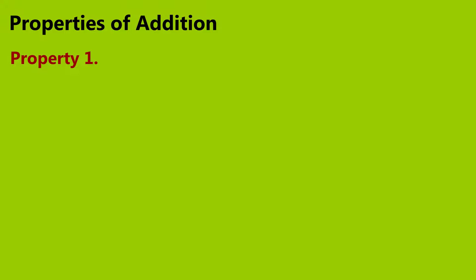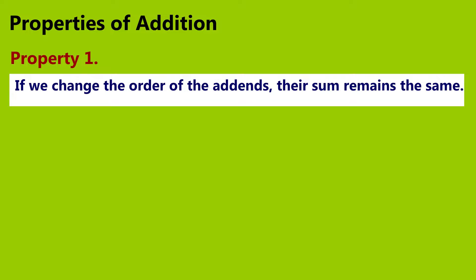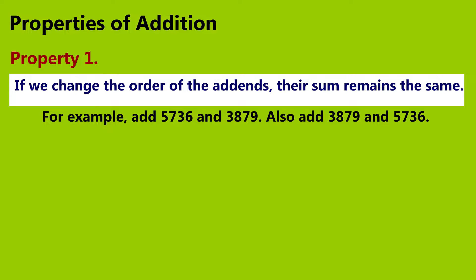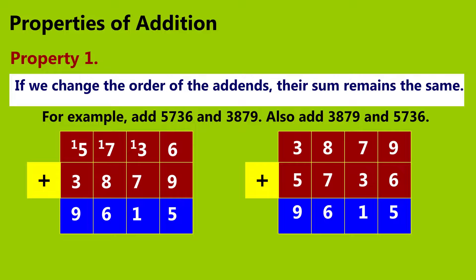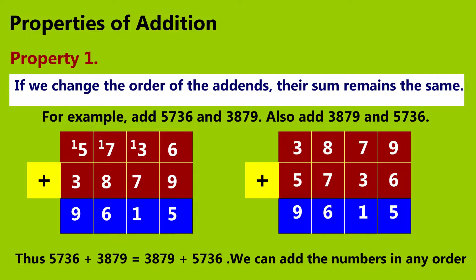Properties of addition. Property 1: If we change the order of the addends, their sum remains the same. For example, add five thousand seven hundred and thirty-six and three thousand eight hundred and seventy-nine. Also add three thousand eight hundred and seventy-nine and five thousand seven hundred and thirty-six. In both cases the sum is nine thousand six hundred and fifteen. Thus, 5,736 + 3,879 = 3,879 + 5,736. We can add the numbers in any order.